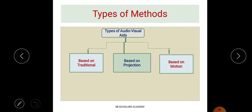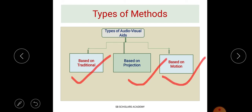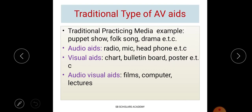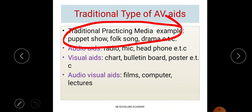These are the key needs of audio visual aids — why they are used in lectures, teaching, and extension activities. Now, regarding the types of audio visual aids, there are three main categories: traditional, projection-based, and motion-based. Traditional media includes methods that have been practiced since earlier times, such as puppet shows, which are considered traditional audio visual aids.